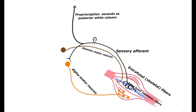The gamma motor neuron is another important neuron that also emerges from the anterior horn gray matter of the spinal cord. It is involved in muscle contractility, stretch, and muscle tension. Gamma motor neuron stimulation increases the tension in the muscle spindle.